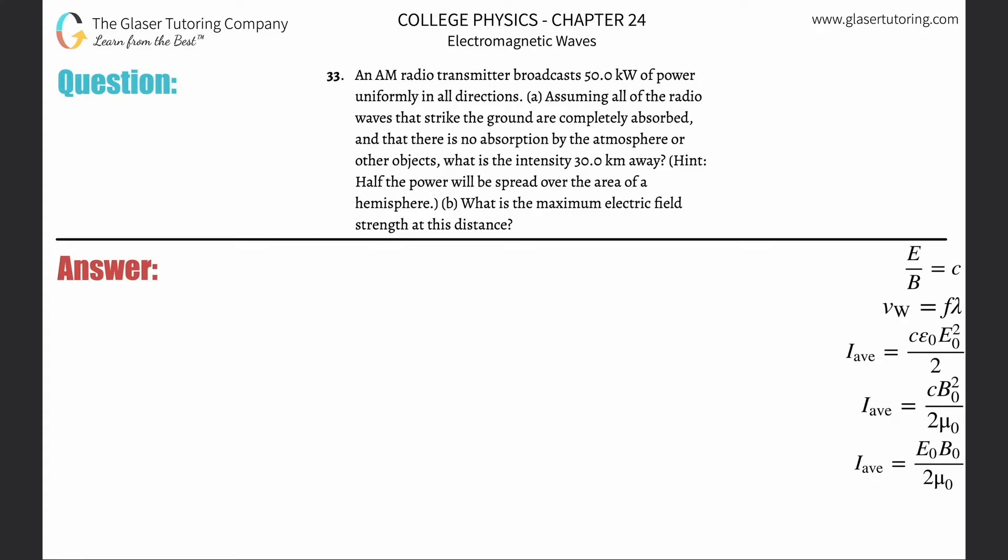Number 33: An AM radio transmitter broadcasts 50 kilowatts of power uniformly in all directions. Letter A: Assuming all the radio waves that strike the ground are completely absorbed and that there is no absorption by the atmosphere or other objects, what is the intensity 30 kilometers away?